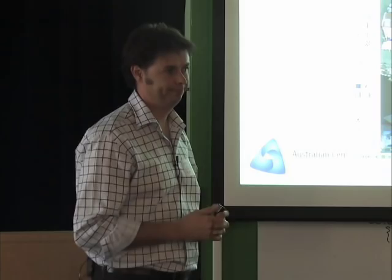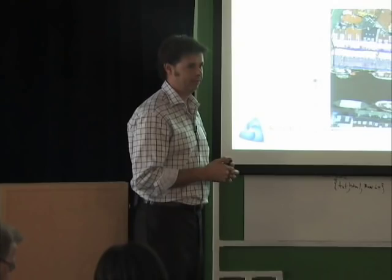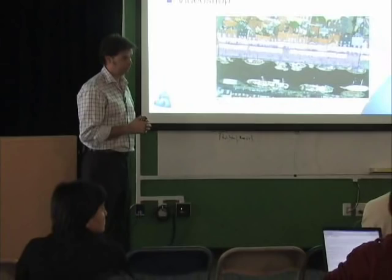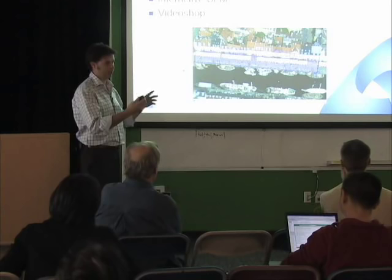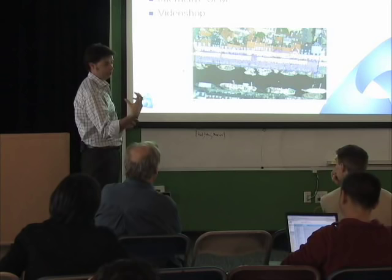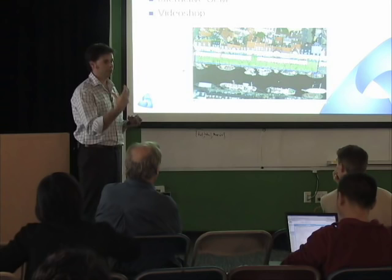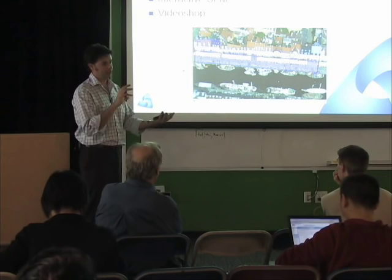Q: Where do you grab the texture from — a single image or multiple? A: Both. The automatic method goes through each polygon and tries to figure out what the best image is to get that polygon's texture from. Sometimes there's something in the way, so you can go back and specify per polygon which image to texture it from. We're also working on ways of doing that automatically and building up better textures over a bunch of images.